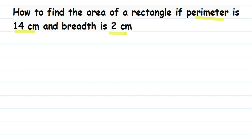What we have to find out is the area of the rectangle. Now we know that to find the area of a rectangle we need two things — one is length and one is breadth. But here they have given only the breadth; we don't know the length. So using the perimeter, we're first going to find the length, and after that we're going to find the area.